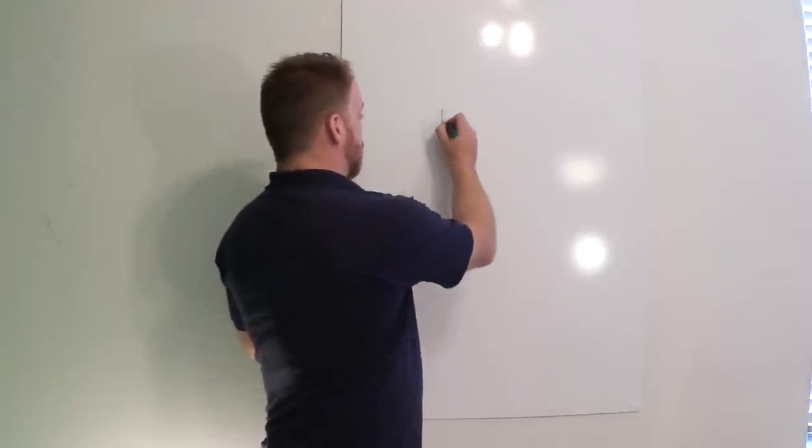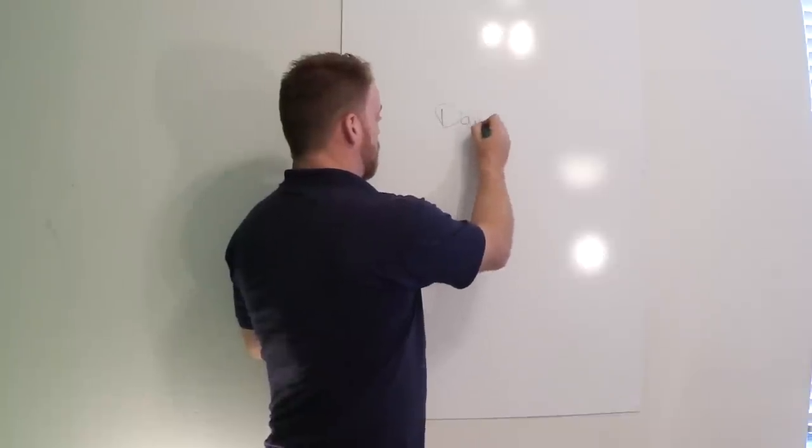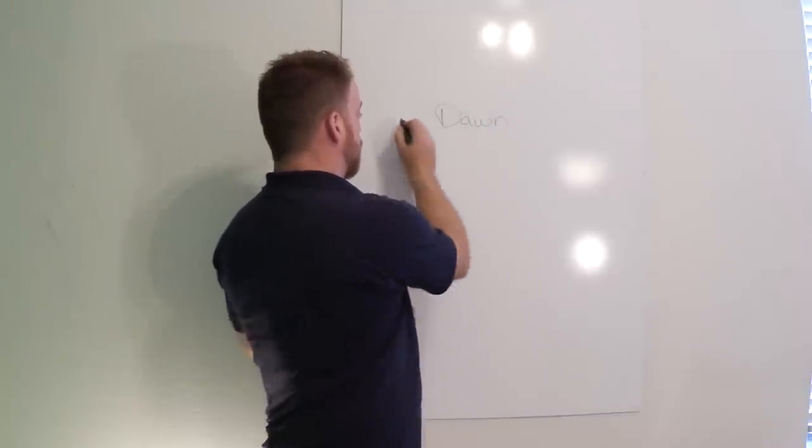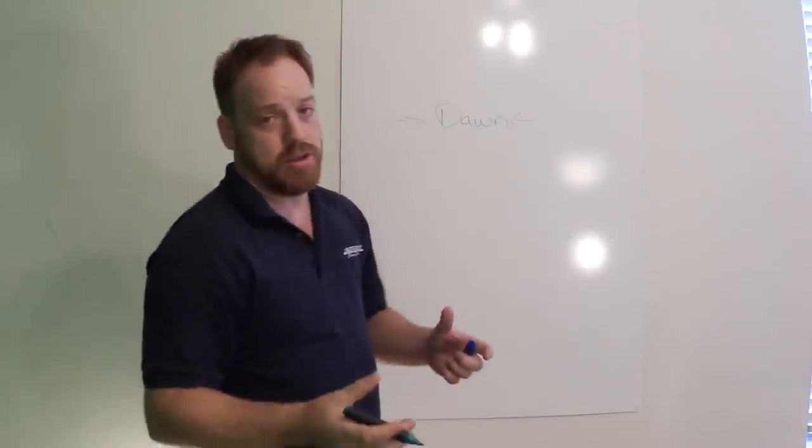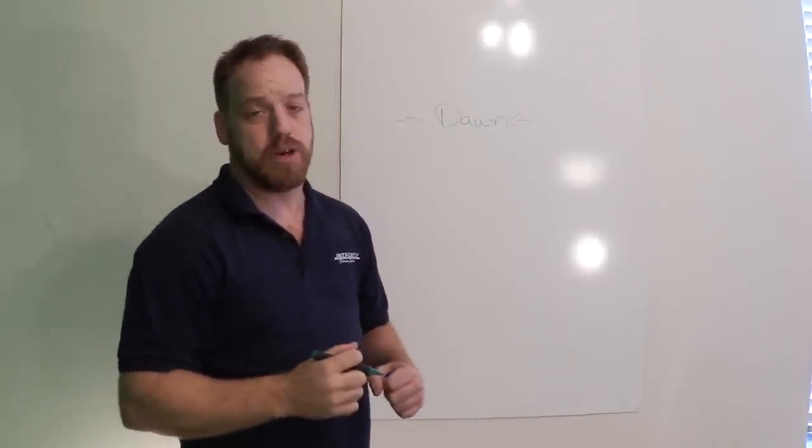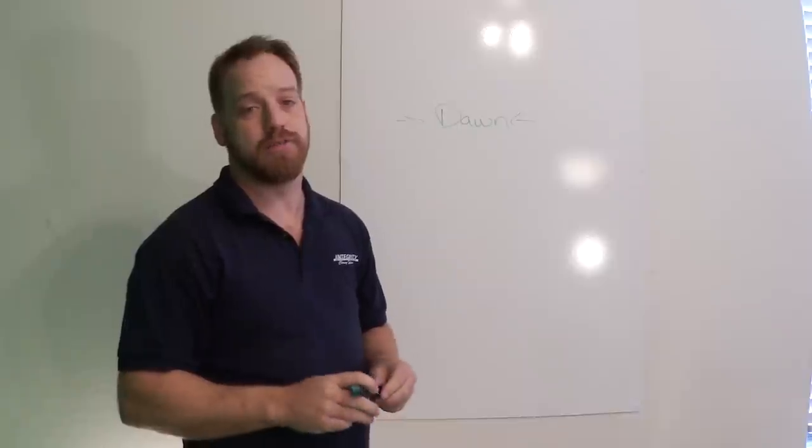What I found was there were basically three different ideas or three different recommendations that you can find on YouTube. The first one was to use some type of degreaser. A lot of people talked about Dawn. Dawn's very good dish soap for degreasing. And they would say, apply it to the oil, scrub it with a stiff brush, pressure wash it, and you're done.